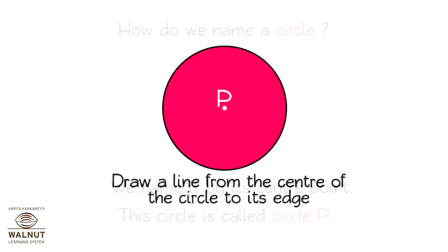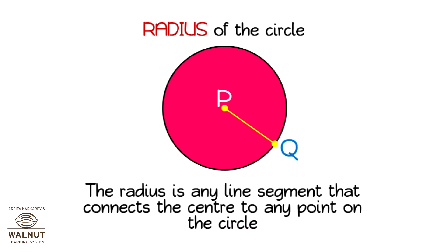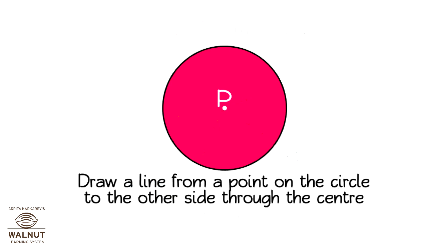Draw a line from the center of the circle to its edge. This is called the radius of the circle. This is radius PQ. The radius is any segment that connects the center to any point on the circle. We can draw multiple lines from the center, and all these lines are of the same length. All radii are of the same length. One radius, many radii.